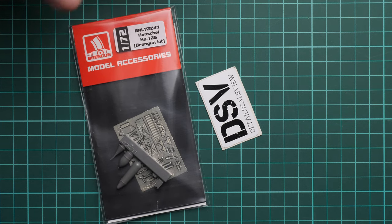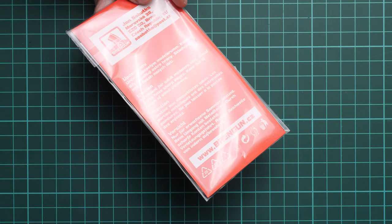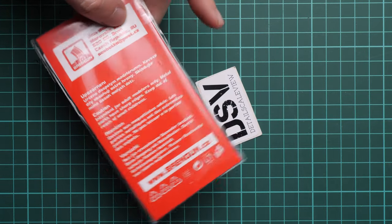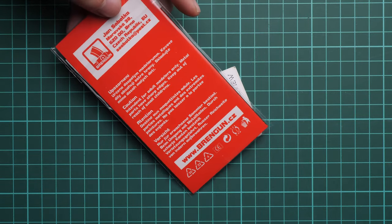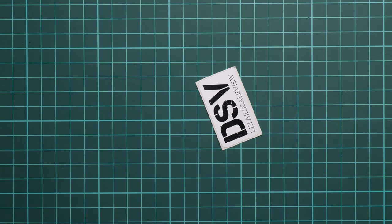First of all, the packaging is typical - it's a resealable plastic bag. We have some safety devices and the manufacturer's address here, also the Brengun website in case you would like to buy it directly from Brengun. Here you can check the contents, but obviously it's better to open it and take a closer look.